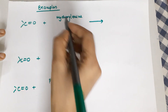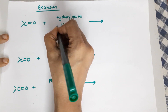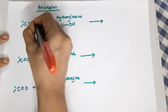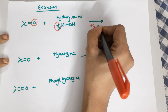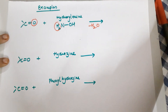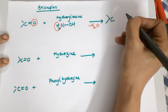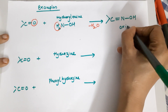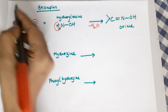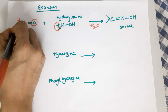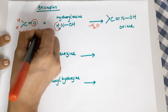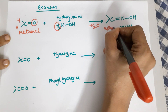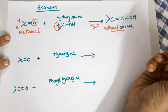Moving on to the next example: your aldehyde or ketone will react with hydroxylamine. Hydroxylamine has an NH2 and an OH group. There is a loss of water, so the product formed is whatever you started with bearing a C=N-OH group. For example, if the starting material is methanal, the product is called methanal oxime.